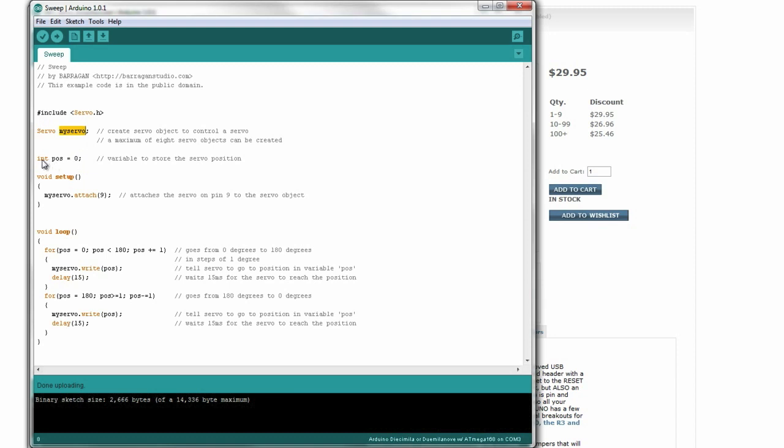We're adding a servo which we're calling myServo - could be servo1, whatever you want to call it. We're creating an integer pos, short for position, and we're storing that initial variable of zero. You don't actually need to store an initial variable, but that's fine. In the void setup, we're doing myServo.attach(9), so we're attaching the servo to pin 9.